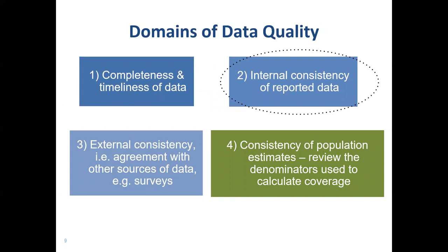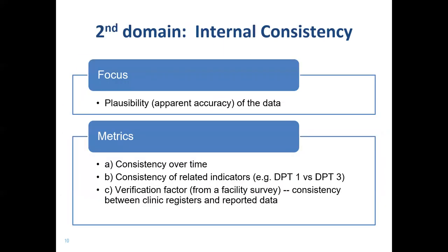Internal consistency — what do we mean by that? You could think of this internal consistency as the apparent accuracy of the data, comparing one aspect of the data with another aspect of the same dataset. And there are several different ways of measuring this internal consistency. A way of measuring is here referred to as a metric.